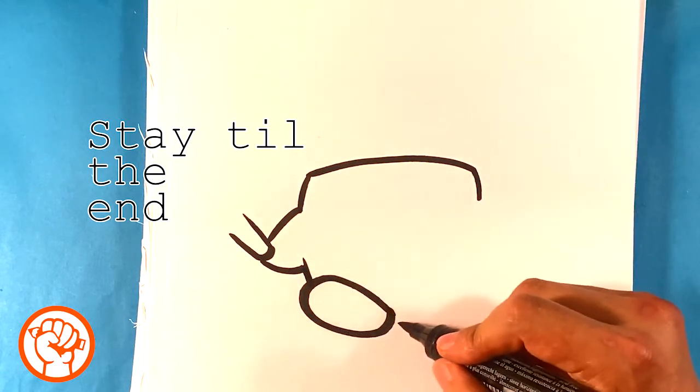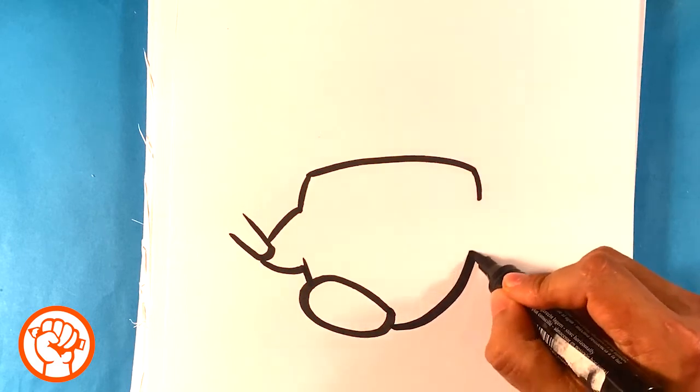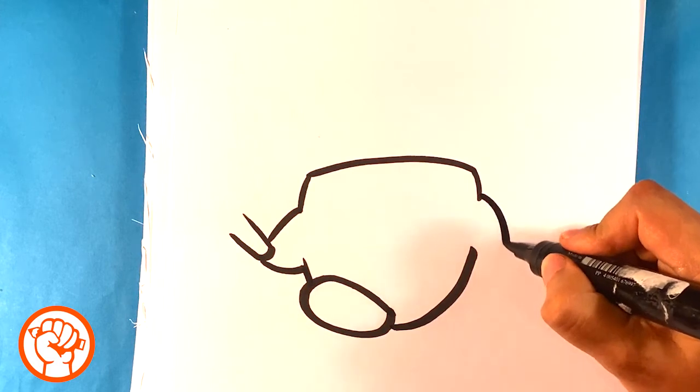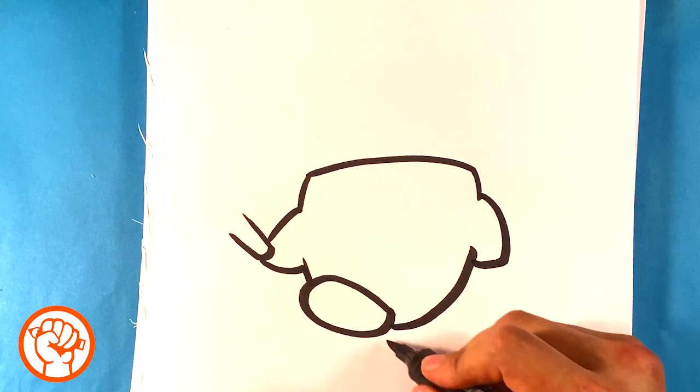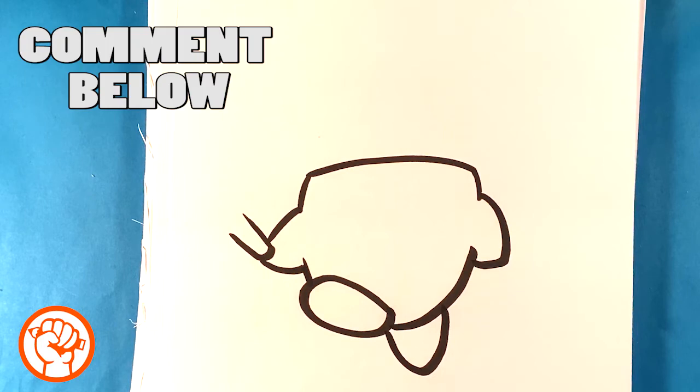All right. And then I'm going to continue this round Kirby shape here. And I'm going to go to his other arm, which is also just a nub. I'm going to get his foot. His foot is down here. He's walking at us.